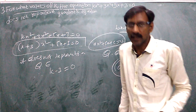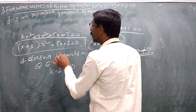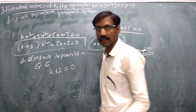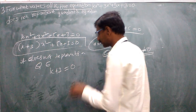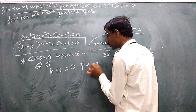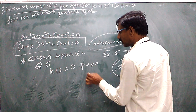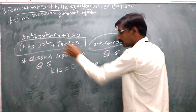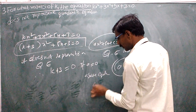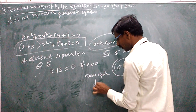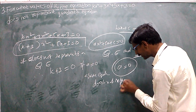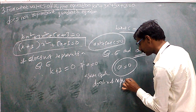So k plus 3 becomes 0, and solving that gives k equals minus 3. The above equation does not represent a quadratic equation when k is equal to minus 3.